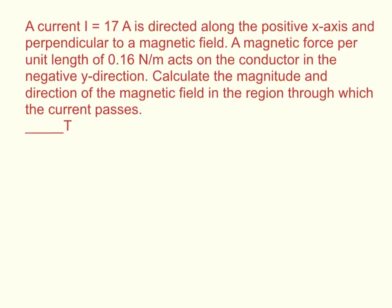So let me relabel this. I have a current in the positive x direction. So this is I. And then I have a force in the negative y direction. This is my force per unit length. So by the right hand rule, the magnetic field should be coming out towards me in the positive z direction.